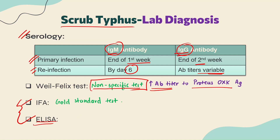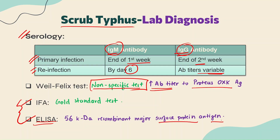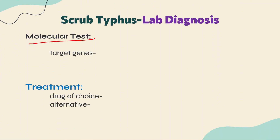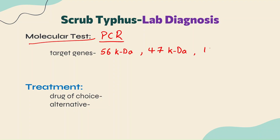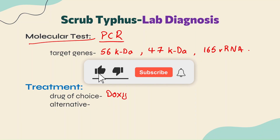ELISA is performed using 56 kilodalton recombinant major surface protein antigens. Molecular testing via PCR can also be done, targeting the 56 kilodalton gene, the 47 kilodalton gene, or the 16S rRNA gene. For treatment, the drug of choice for most rickettsial infections is doxycycline.